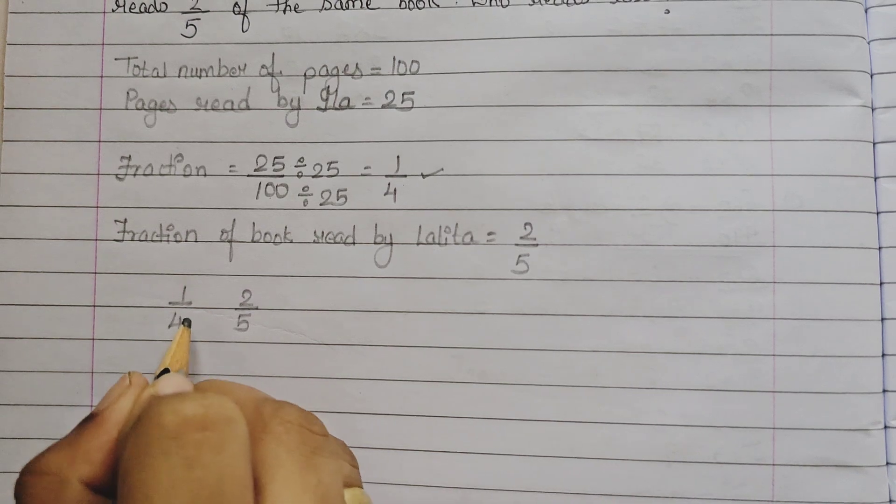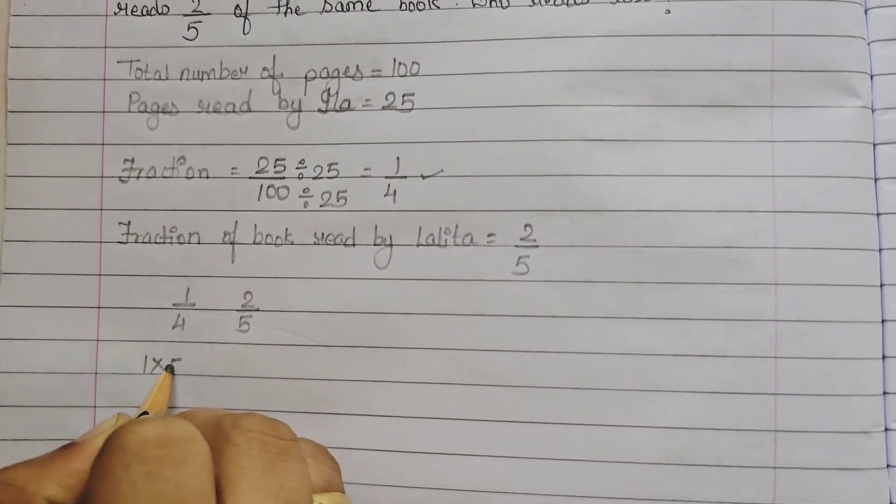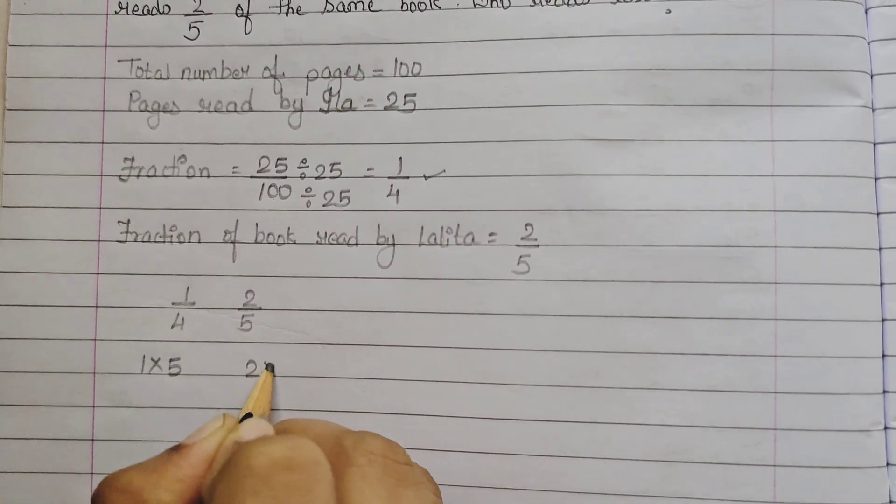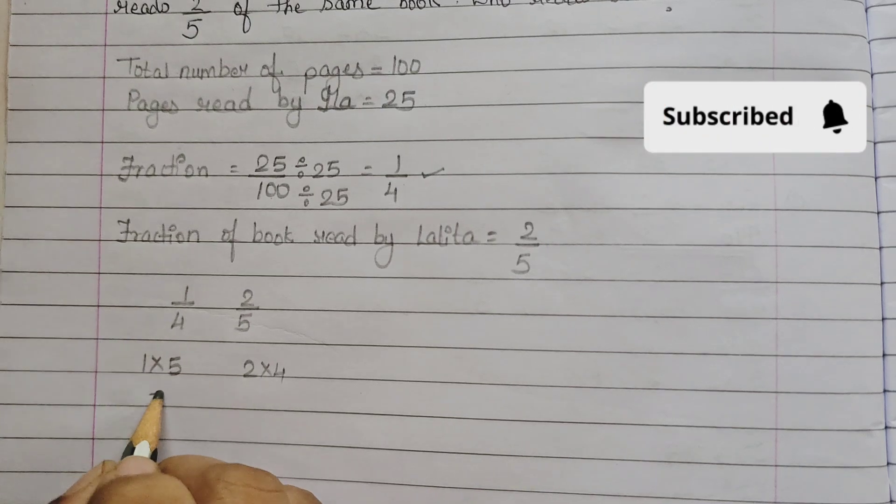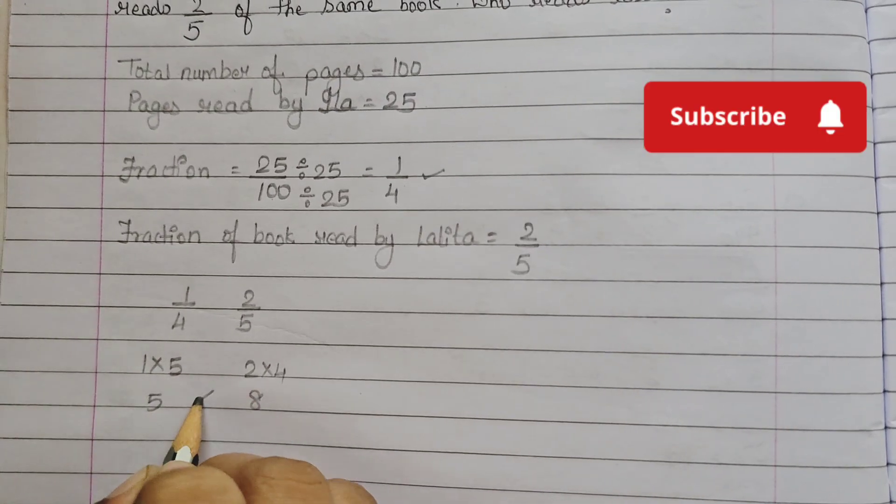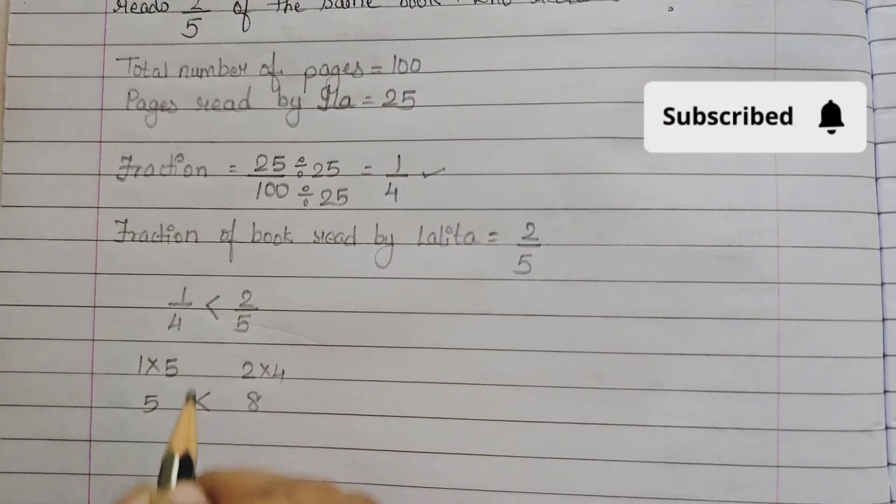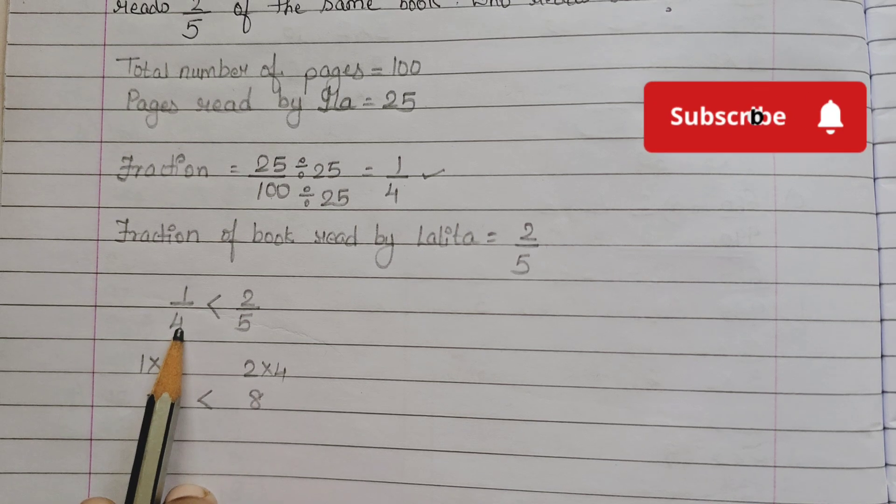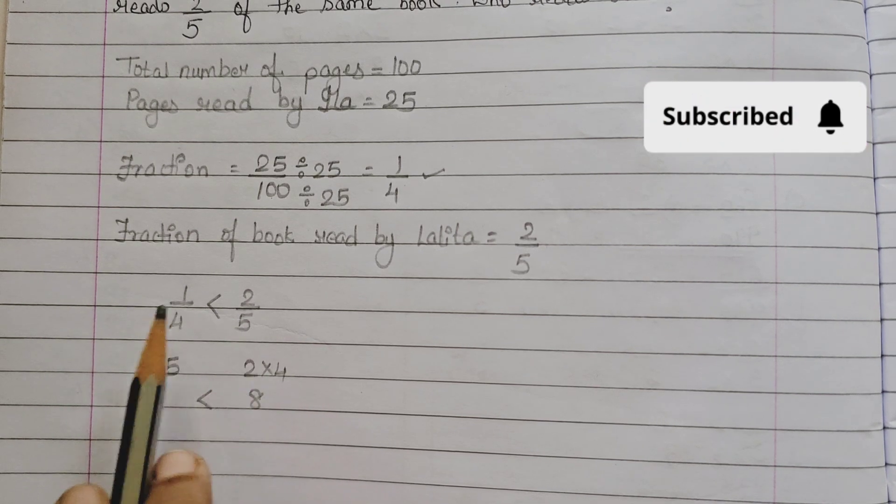So, now do the cross multiplication: 1 into 5 and 2 into 4. 1 into 5 is 5, 2 into 4 is 8. That means, 2 upon 5 is bigger. That means, 1 upon 4 is less than 2 upon 5. That means, Ila read less than Lalita.